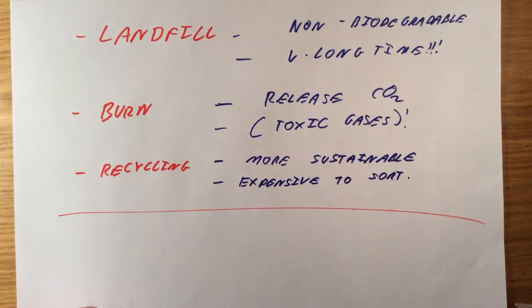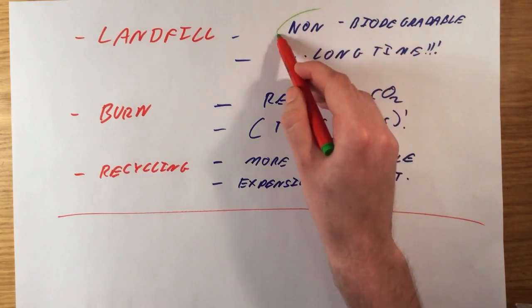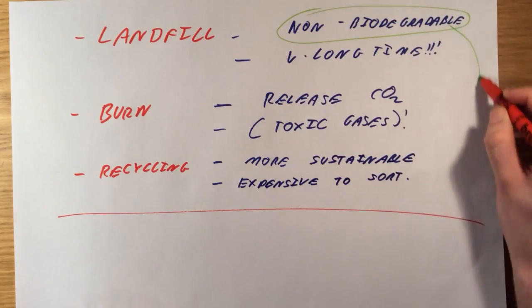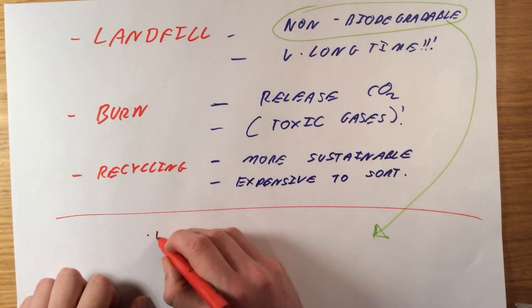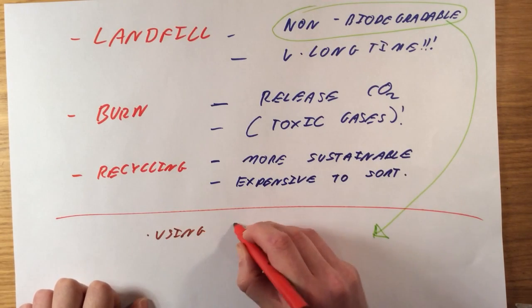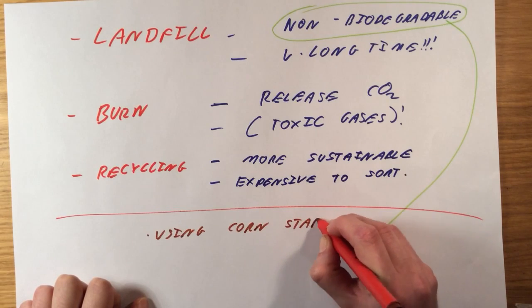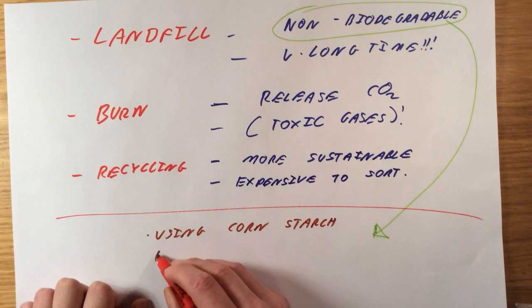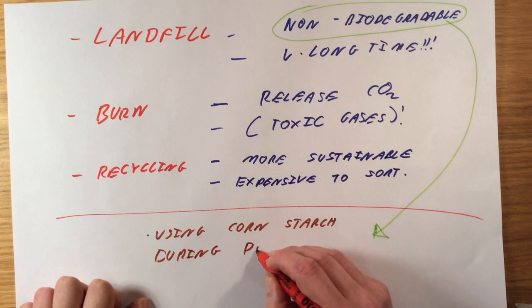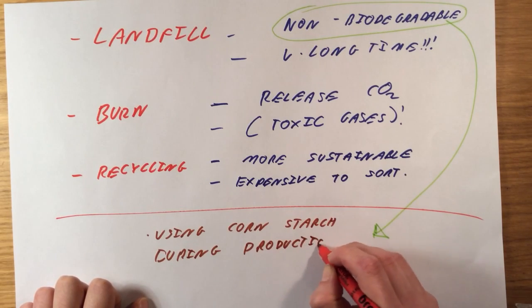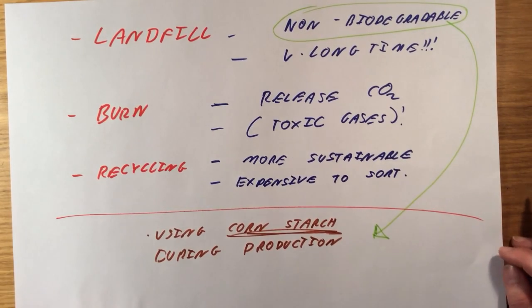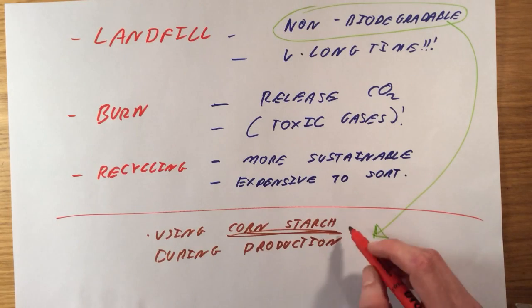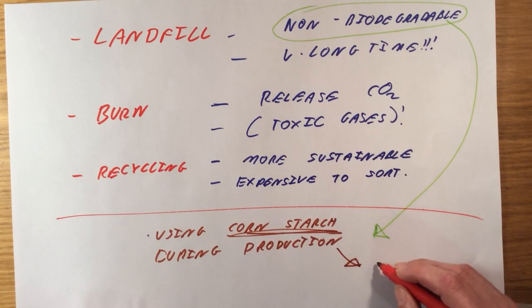There is another way which we might be able to get around this problem of plastics being non-biodegradable, and that is by producing polymers which are biodegradable. One way of doing that is by using cornstarch during production of our polymer. You can include a compound based on cornstarch in your polymer when you're making it, and this will mean that the polymer you form is biodegradable.